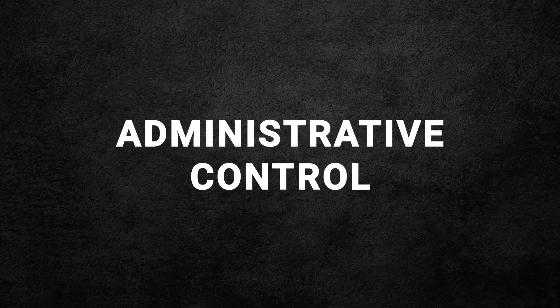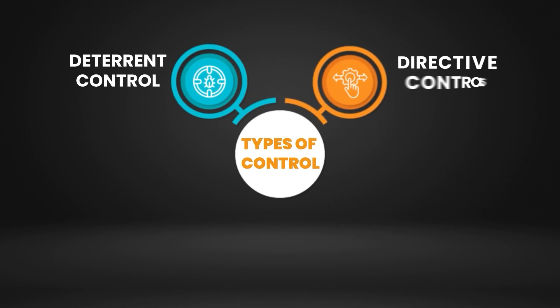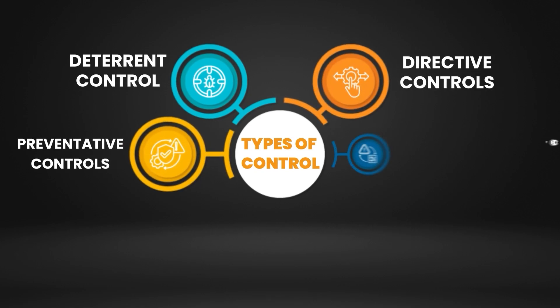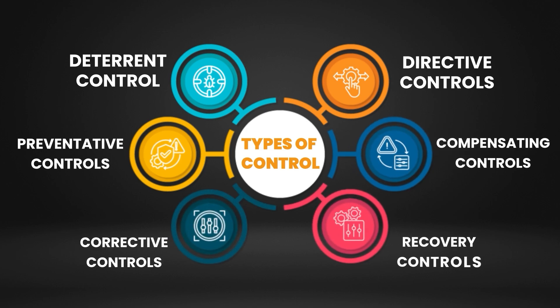The next topic is controls. You should know control types and categories — very important. There are three types: physical controls, technical controls, and administrative controls. There are seven categories: deterrent, directive, preventative, compensating, corrective, recovery controls, and more. You don't need to memorize — you need to think about which control to use where.